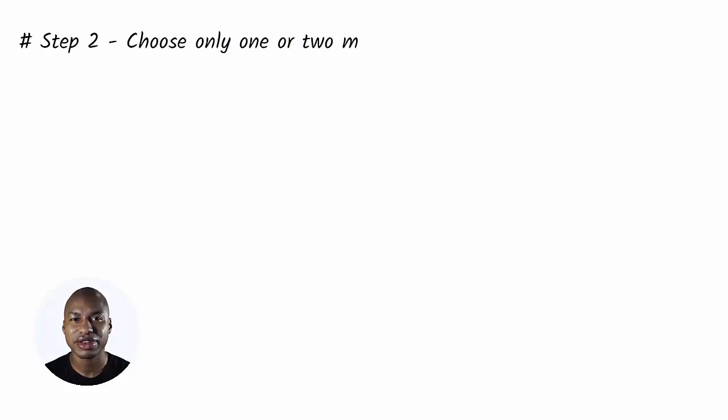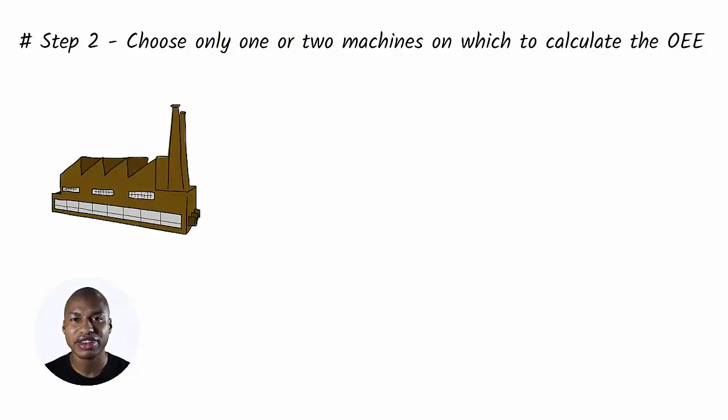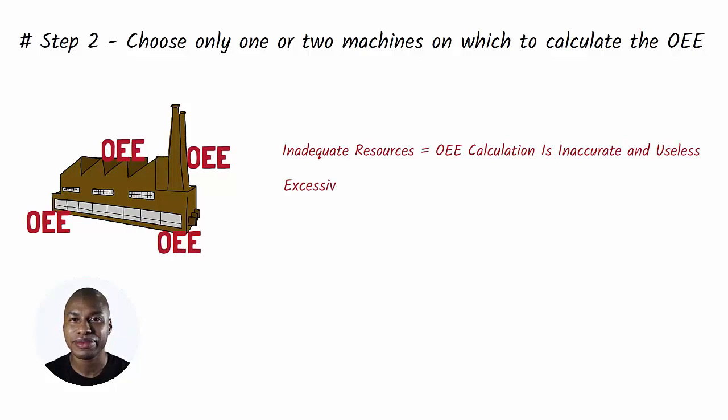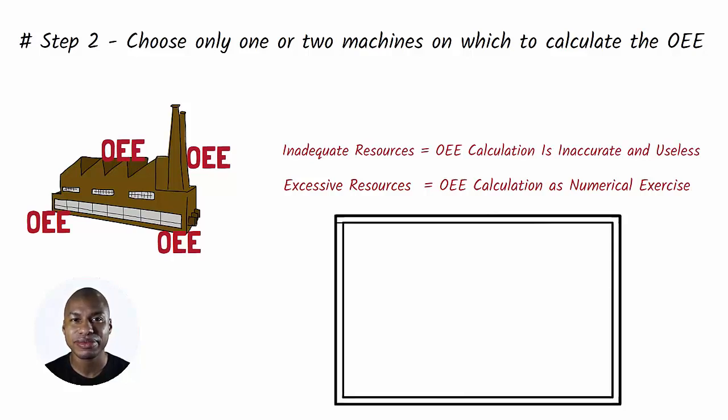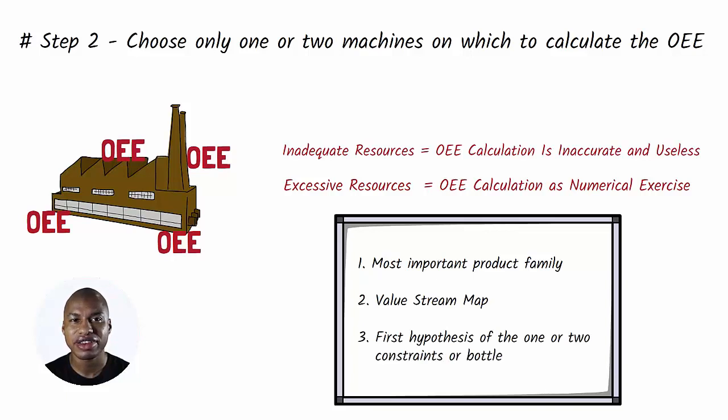Step 2. In the beginning, choose only one or two machines on which to calculate the OEE. I have often seen companies start with the OEE calculation on all the machines in the company, with inadequate or excessive use of resources. When resources were inadequate, the calculation was inaccurate and therefore useless. When resources were excessive, calculating the OEE of 50 machines became a numerical exercise that lost its meaning. My method involves starting with the most important product family, making the value stream map, and, with the team, making a first hypothesis of the one or two constraints or bottleneck machines.